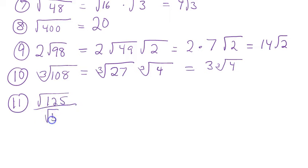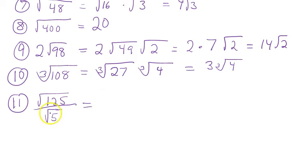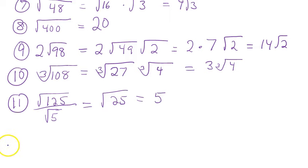Sometimes you encounter fractions with square roots. For the square root of 125 over the square root of 5, first check if the numbers reduce before rationalizing. Think of it as 125 over 5 — that reduces to 25. Since it's under a square root, put 25 under a square root, and the square root of 25 is 5.